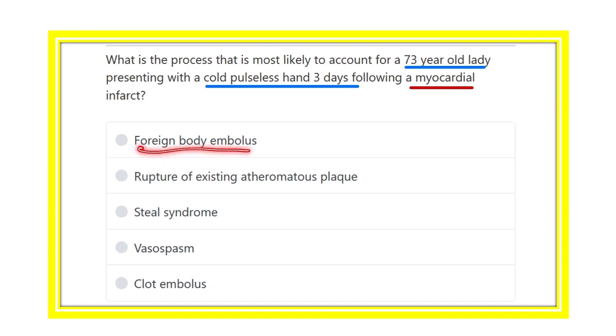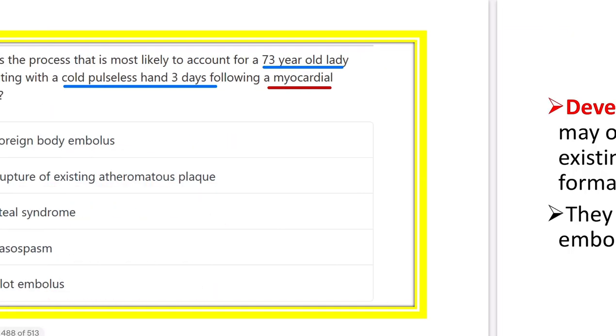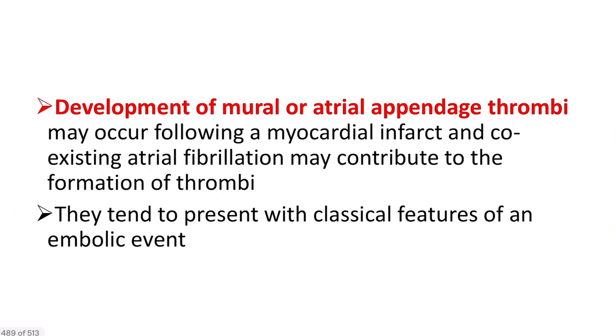Here are the options: foreign body embolus, rupture of an existing atheromatous plug, Stille's syndrome, vasospasm, and clot embolus. So, what may be the answer?